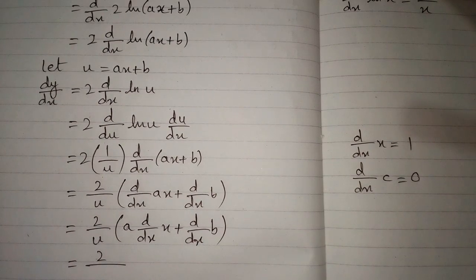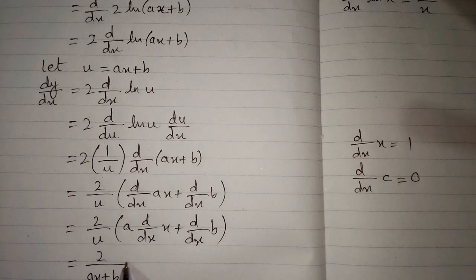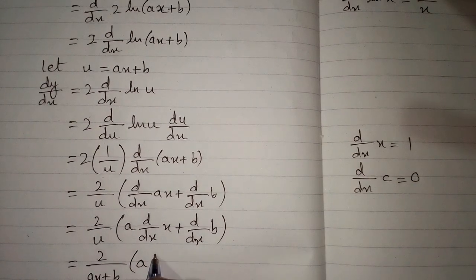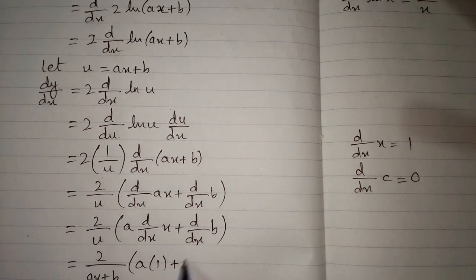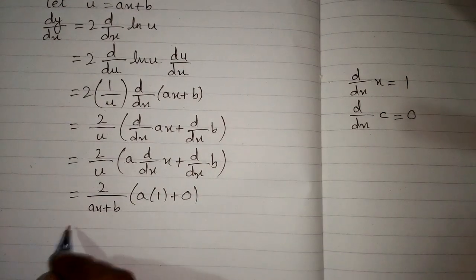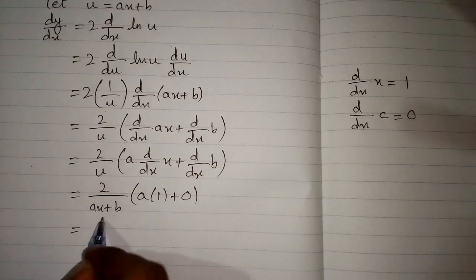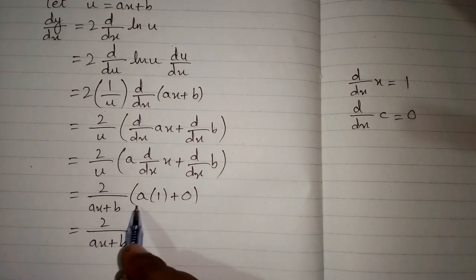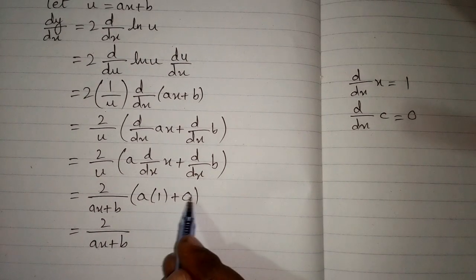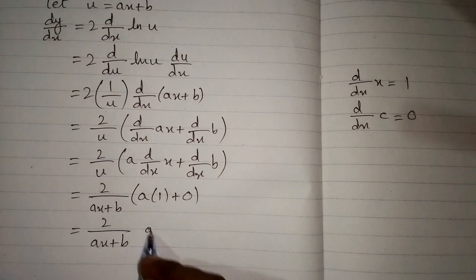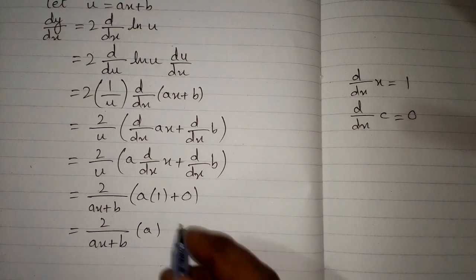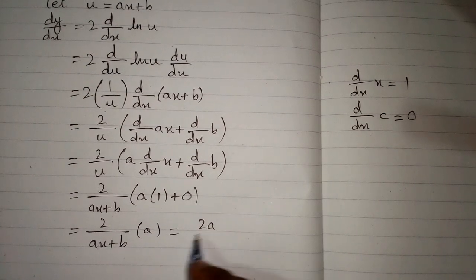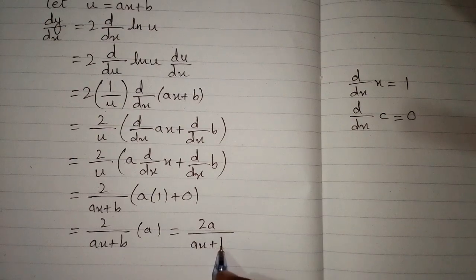Now we substitute back u equals ax+b. The derivative of x is 1 and the derivative of b is 0, giving us 2 times 2 upon (ax+b), and a times 1 is a, and a plus 0 is a. So the final answer is 2a upon (ax+b).